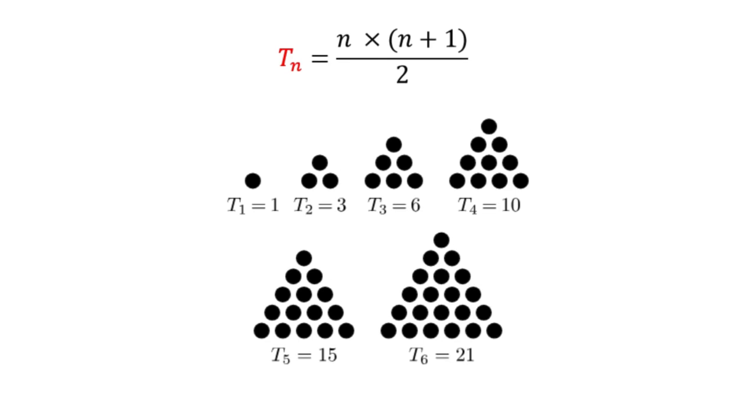Let's visualize it. When n is 1 we have one dot forming a simple triangle. For n equals 2 we add 2 more dots below the first dot making a total of 3 dots. For n equals 3 we add 3 more dots and now we have a total of 6 dots. This pattern continues infinitely.